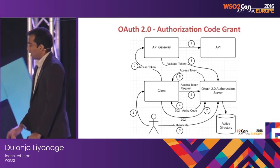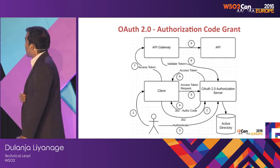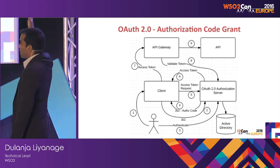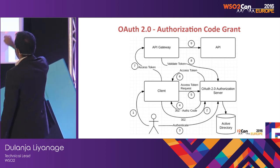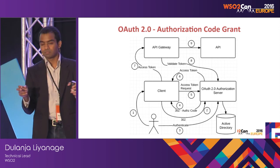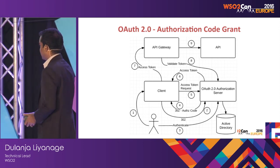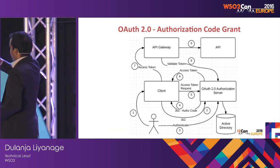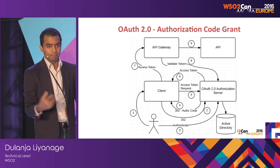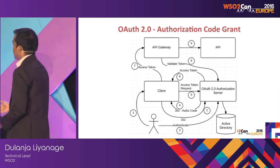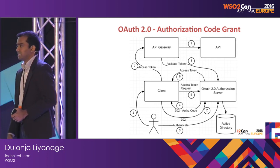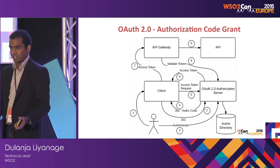Here's a quick look at how the authorization code grant flow works. There's a client, an API gateway (this can be WSO2 API gateway) fronting the actual API, an OAuth 2.0 authorization server which grants the OAuth token, and an active directory plugged to the authorization server. The user first tries to access the client. The client wants to get some data of the user from an API. On the second step, the client does a redirect to the OAuth server — in API manager's case, to WSO2 IT servers.